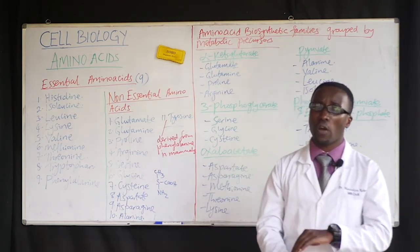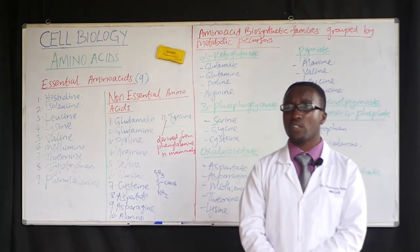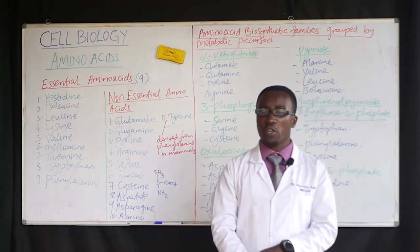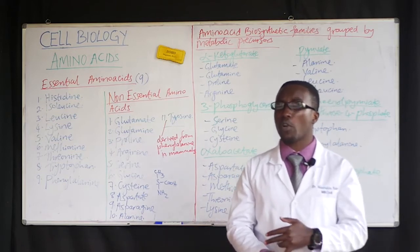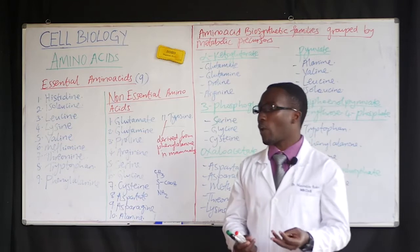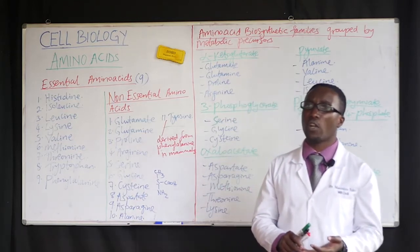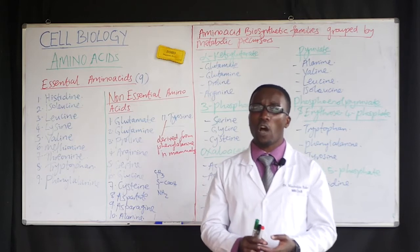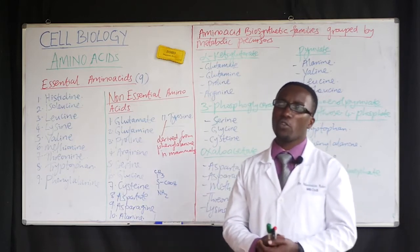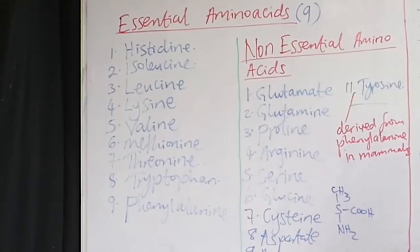Proteins are organized in levels according to structure. We have the primary structure, which refers to the amino acid residues in various parts of the protein. We also have the secondary structure, which includes arrangements like the alpha-helix.